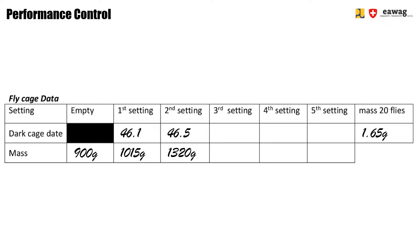In the last column on the right side you'll see the mass of 20 flies. This is the data that we take by removing 20 flies from the loft cage, paralyzing them and noting down their weight.